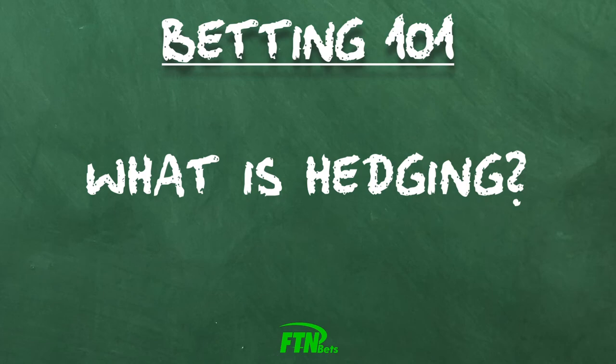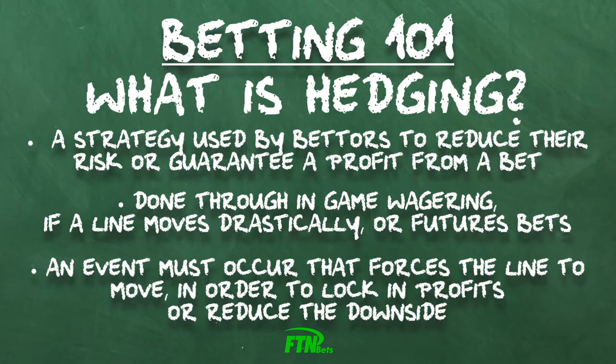Hedging is a strategy used by bettors to either reduce their risk or guarantee a profit from a bet. This can be done through the use of in-game wagering on a single event, if a line moves drastically, or with futures bets. The key is some event must occur that forces the line to move in order to offer an opportunity to lock in some profits or reduce the downside.